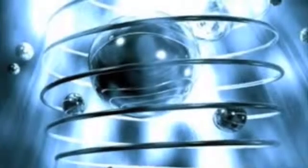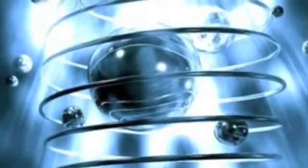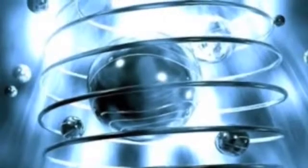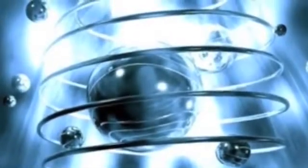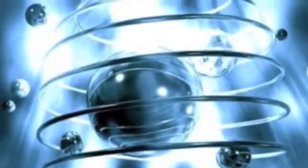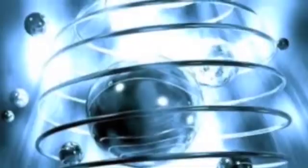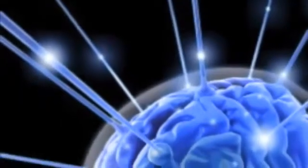Epoch 3: Brains. Each epoch continues the evolution of information through a paradigm shift to a further level of indirection. Evolution uses the results of one epoch to create the next. In the third epoch, DNA-guided evolution produced organisms that could detect information with their own sensory organs and process and store that information in their own brains and nervous systems.